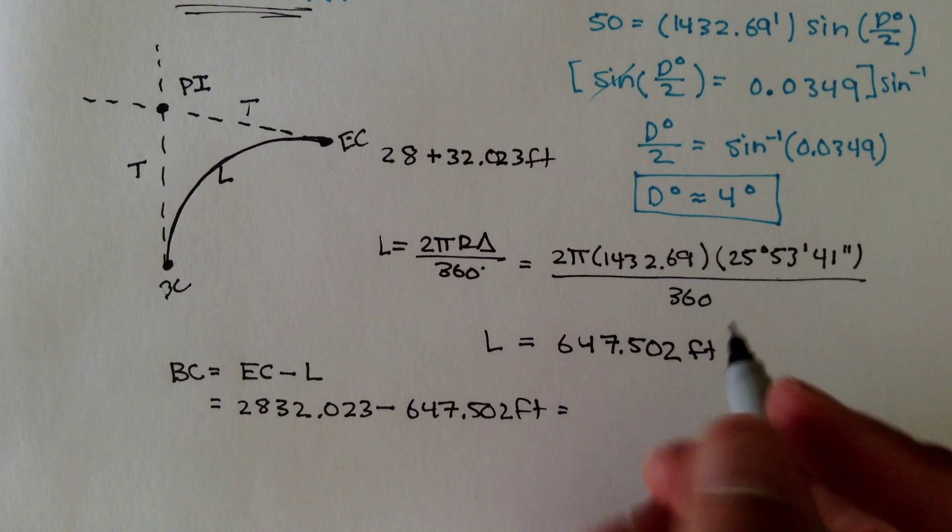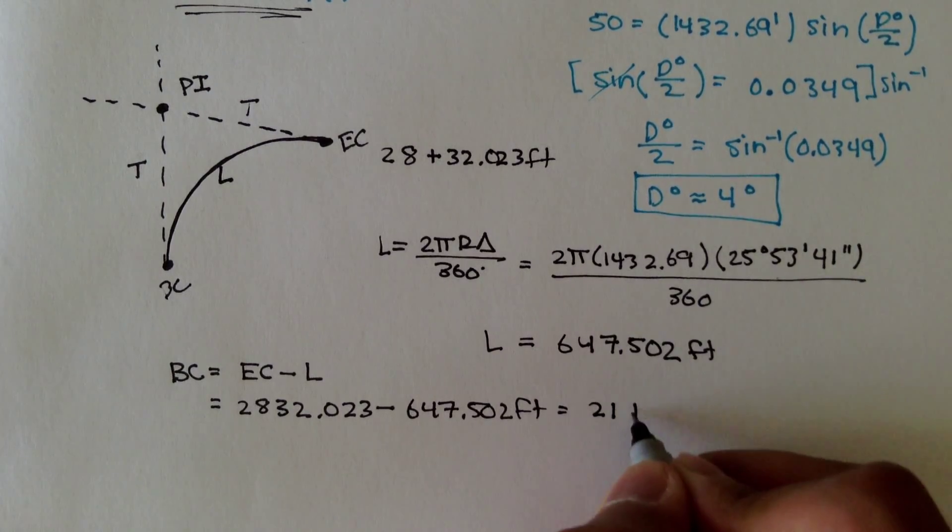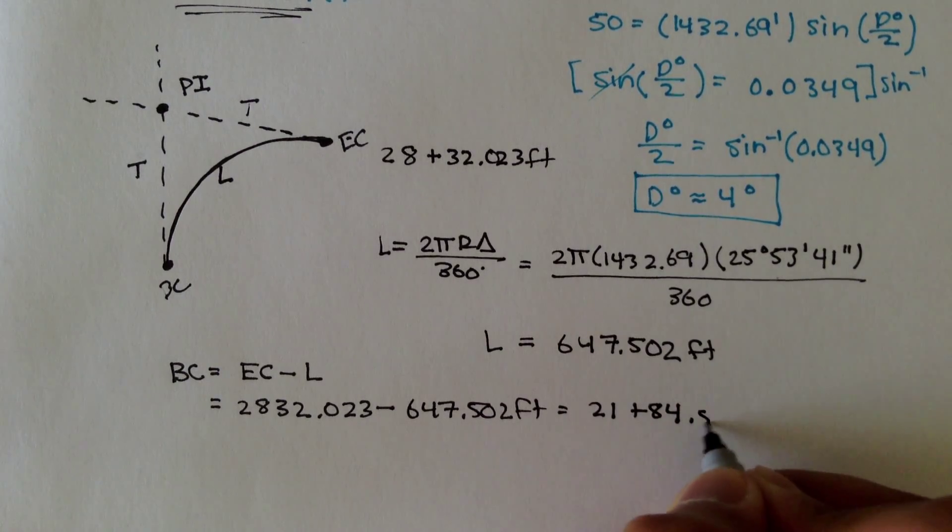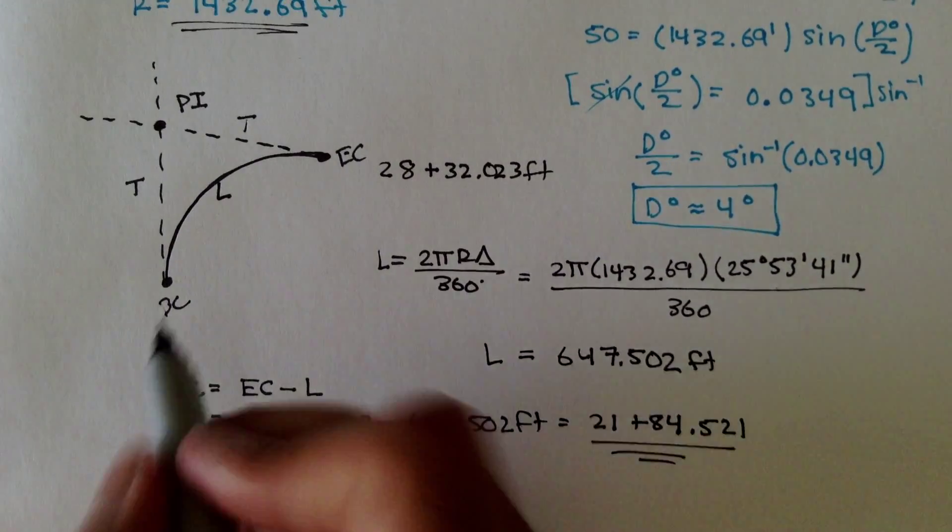You subtract 647.502 feet from that, and you should get 21 plus 84.521. This is the station for the beginning of curve.